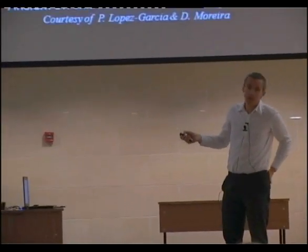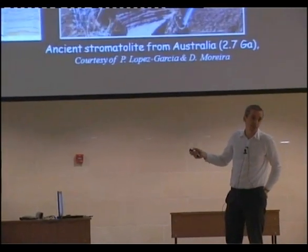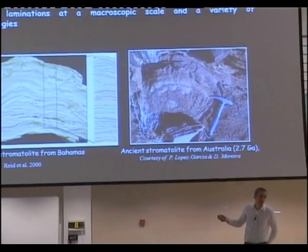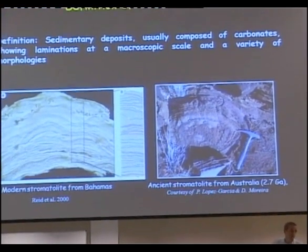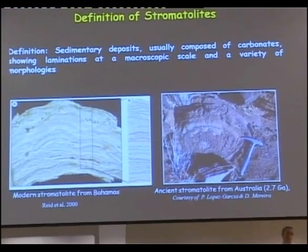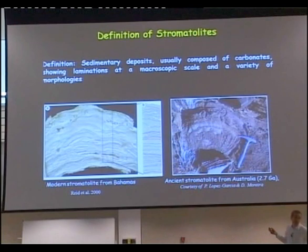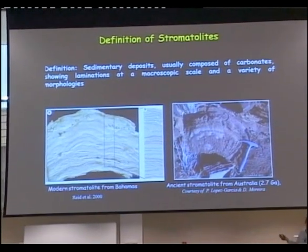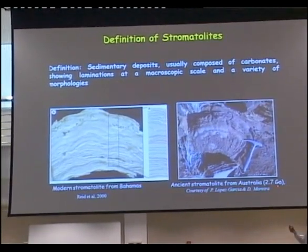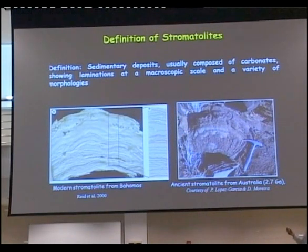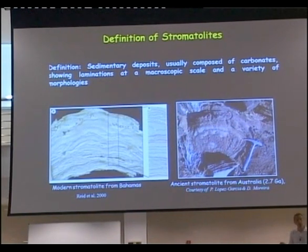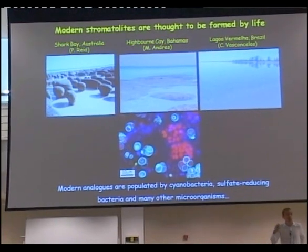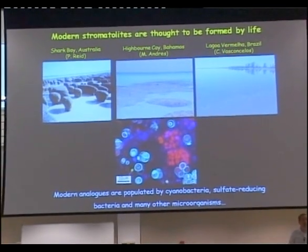We know modern stromatolites, like this one that comes from the Bahamas — so this formed very recently, or this is currently forming. And we know very ancient stromatolites, like these ones, that are 2.7 billion years old. These stromatolites, we have found them for a long, long time in the geological record.